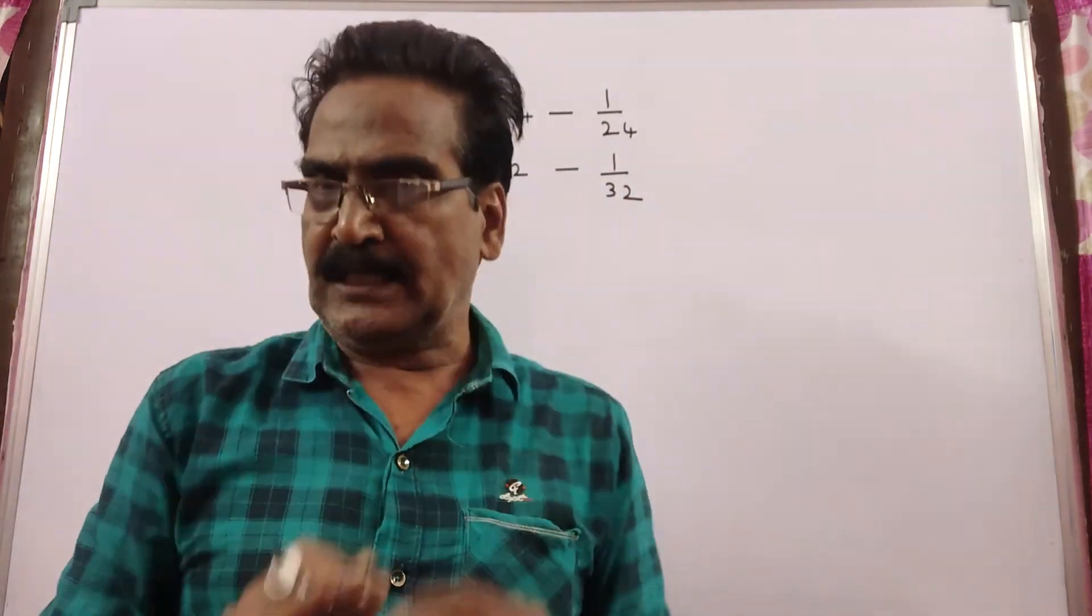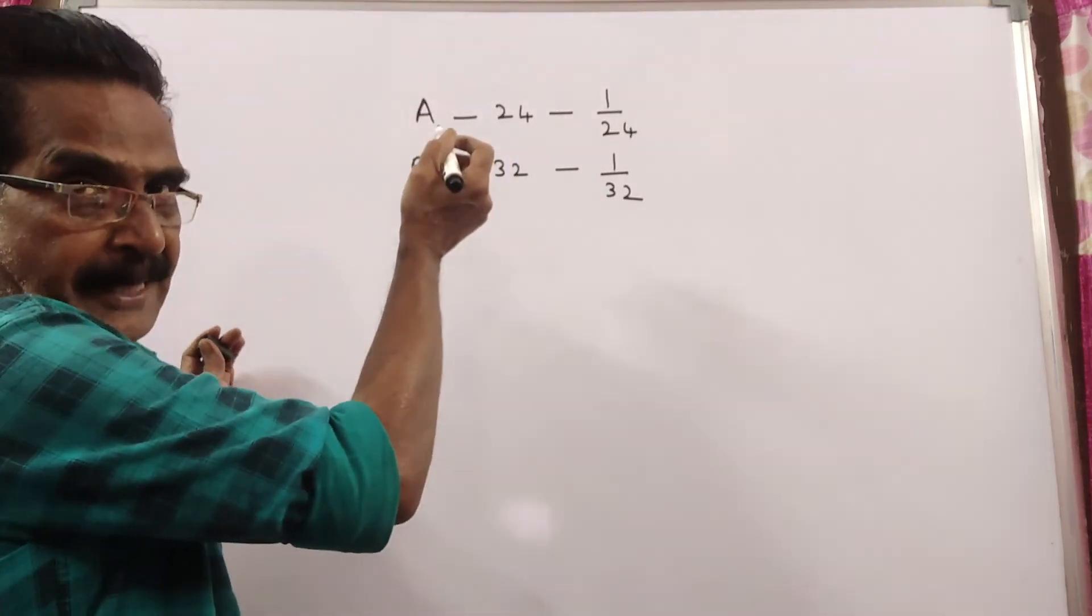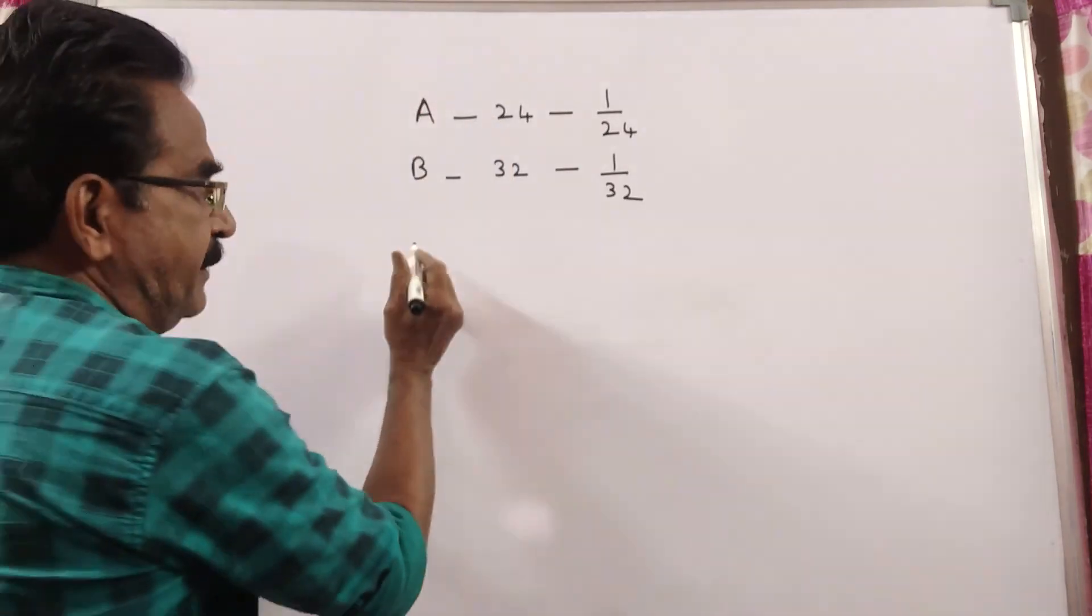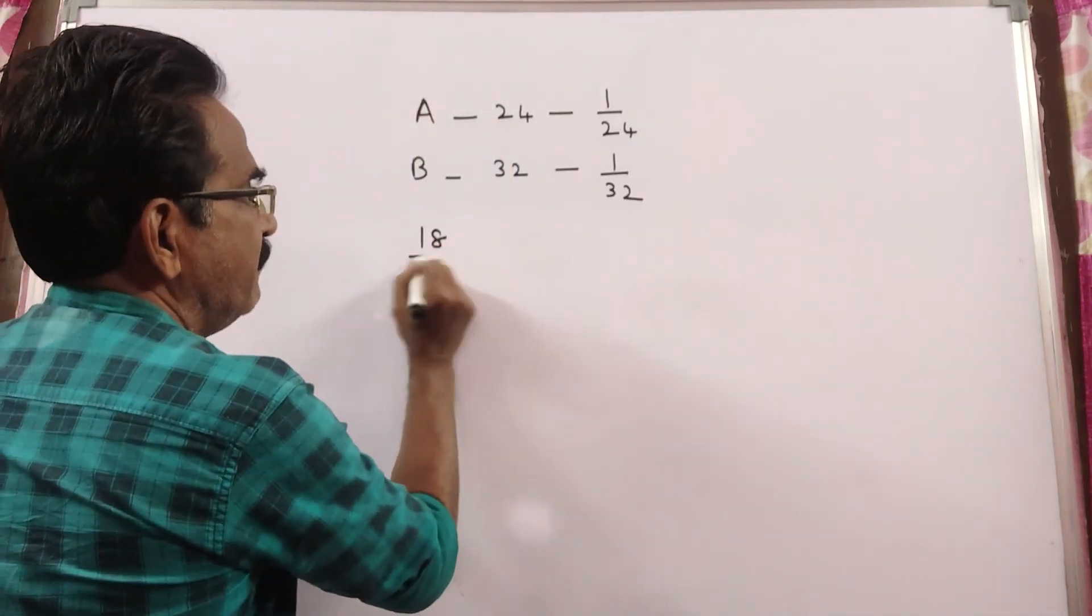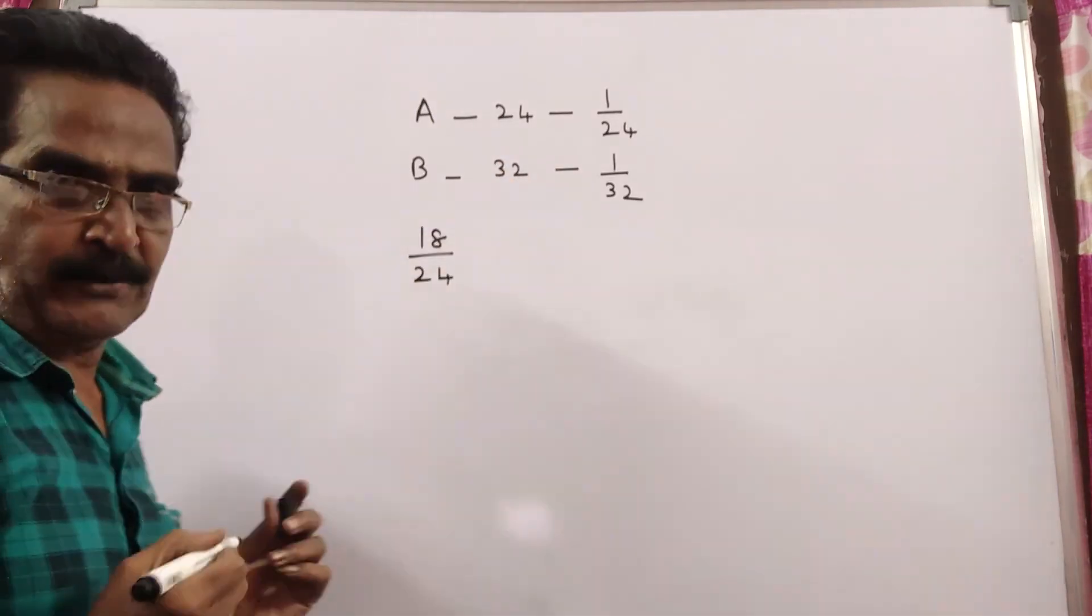Now the total work is the work done by pipe A in 18 minutes, which is 18 into 1 by 24.